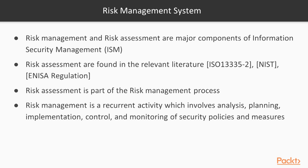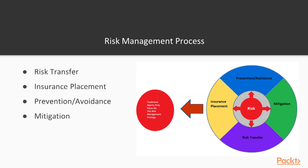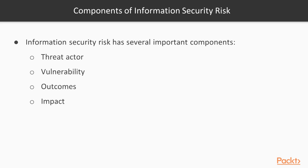Risk management processes have four parts: risk transfer, insurance placement, prevention or avoidance of risk, and mitigation of risk. These four components represent the types of risk management. Now we move on to the components of information security risk.